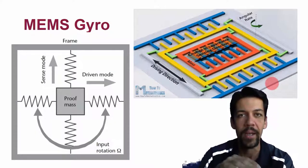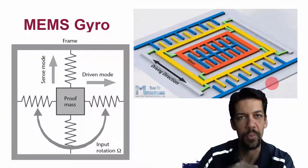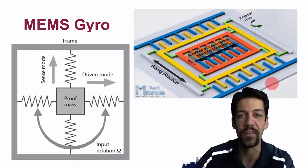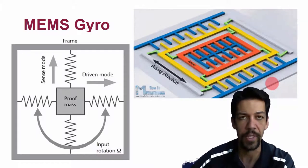We can sense it in the same way using either resistive springs or capacitive aspects on the chip itself. That gives us an idea of how much the system is rotating.